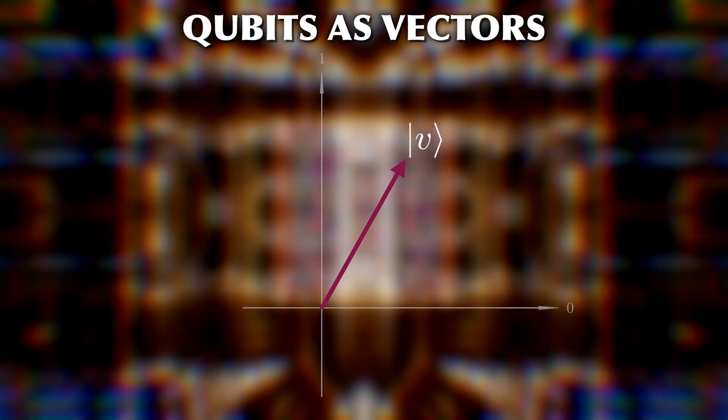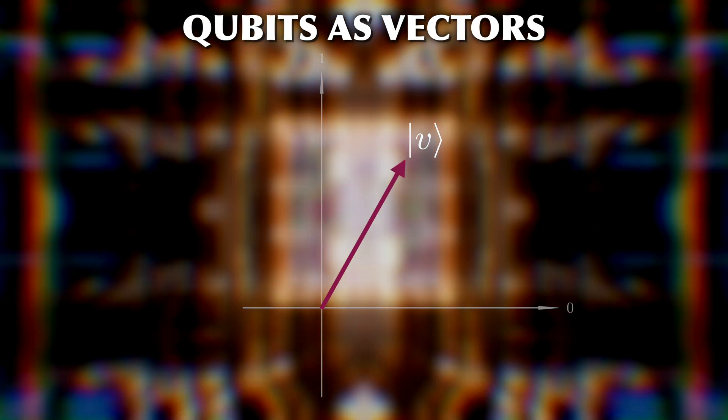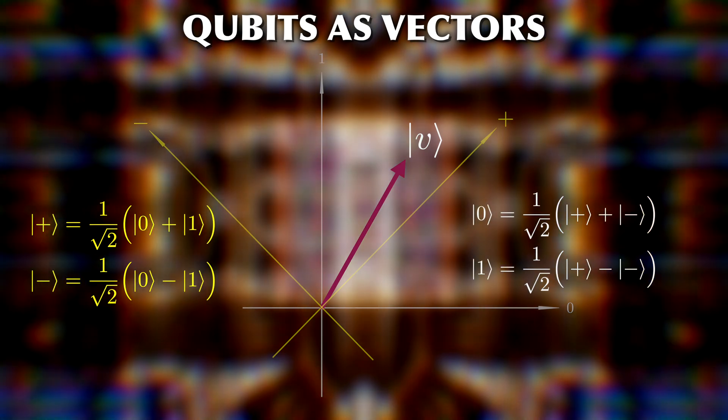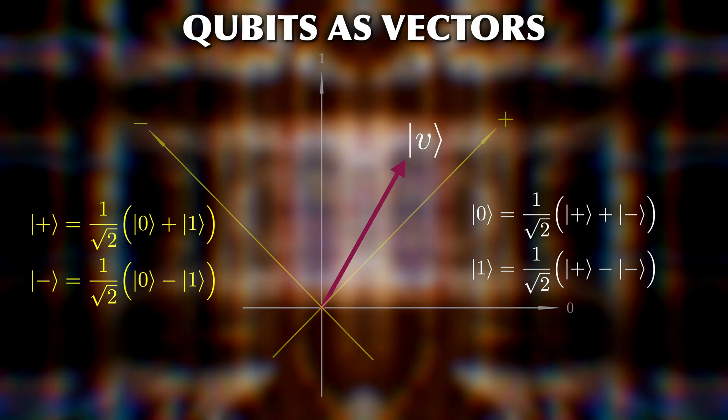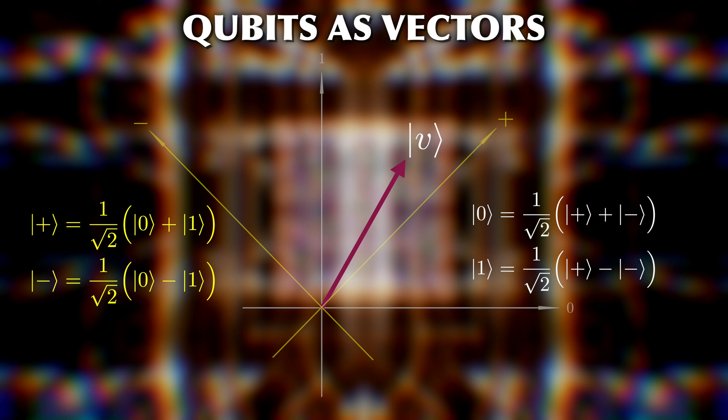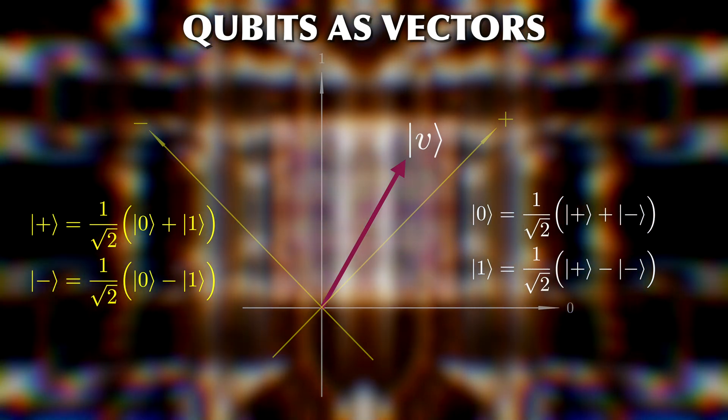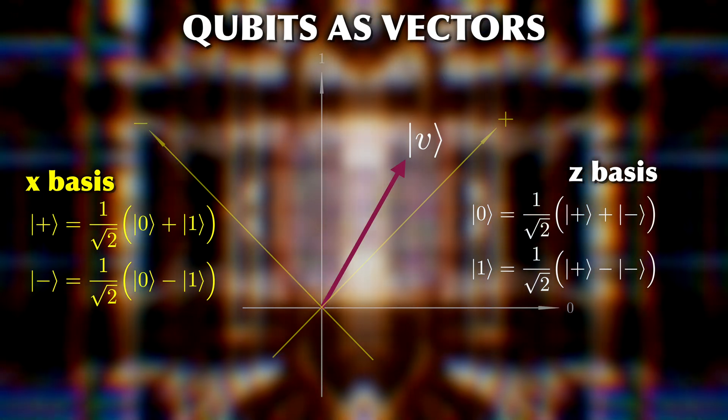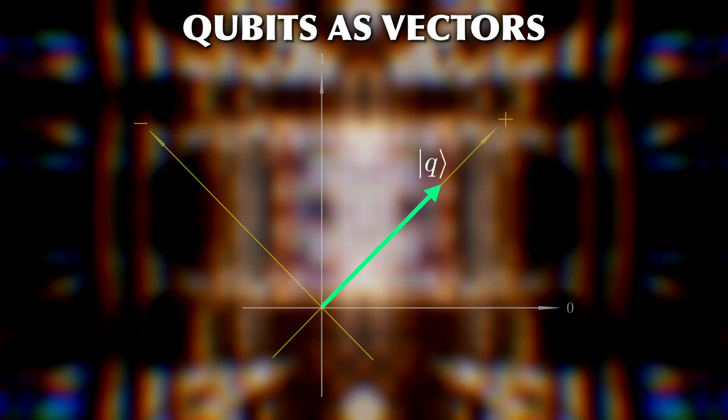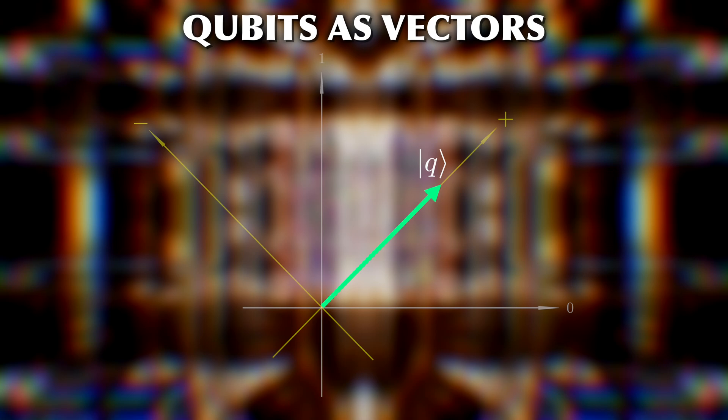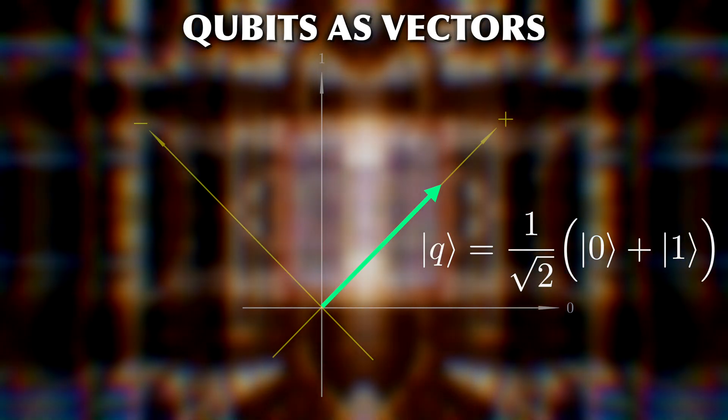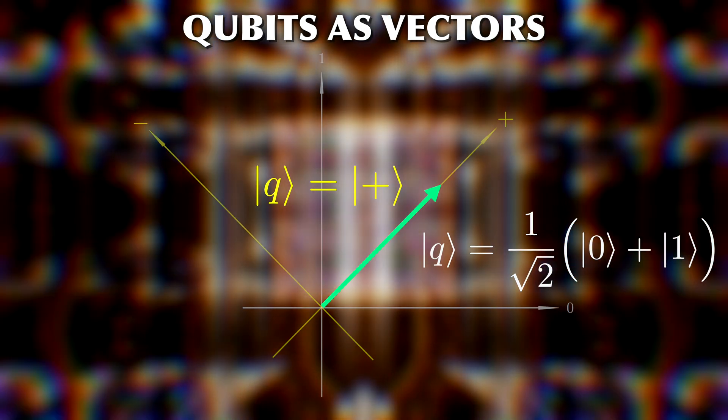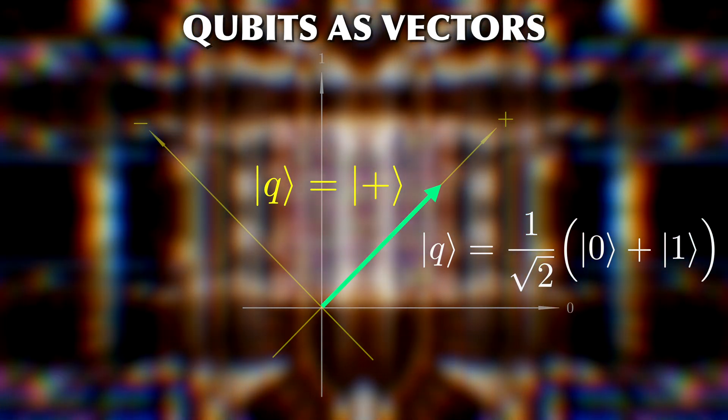In the case of qubits, we have the standard bases of 0 and 1, but we can also use the plus and minus bases. These two bases are related and can be freely transformed from one to the other. For historical reasons, we call these the Z bases and the X bases. One other important consequence we can immediately see here is that if you describe a state in a different basis, the superposition may vanish. So, whether a state is in a superposition or not is entirely dependent on the bases used.